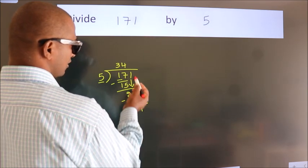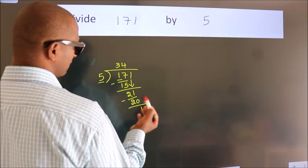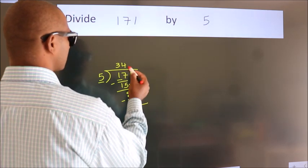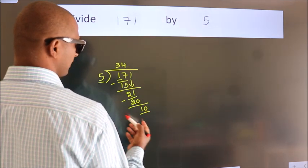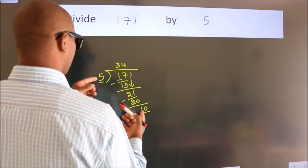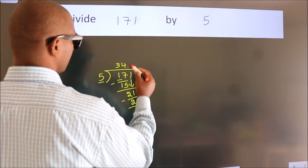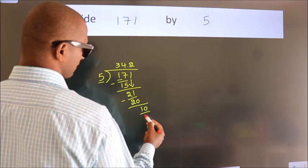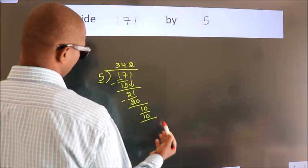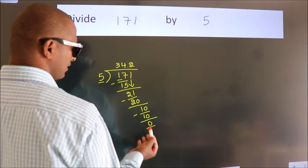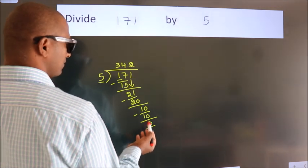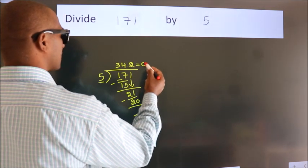After this, there are no more numbers to bring down. So what we do is put a dot and take 0, giving us 10. When do we get 10 in the 5 times table? 5 times 2 is 10. Now we subtract. We get 0. We got remainder 0, so this is our quotient.